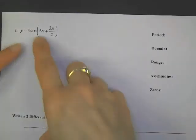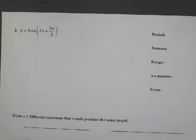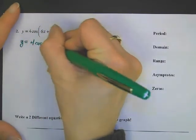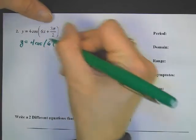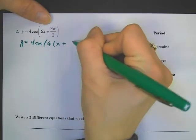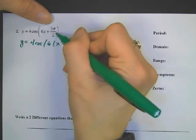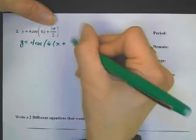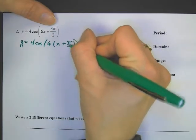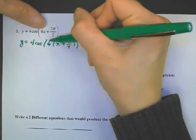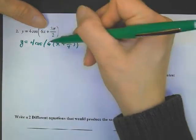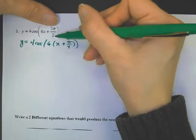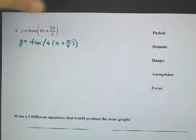Let's do a cosine graph that is certainly not ready — we're going to have to factor out a 6. Dividing by 6 means putting a 6 on the bottom. Then 3 over 12 gives π over 4 — let's verify: 6 times x, good; 6π divided by 4 — does 6 over 4 reduce to 3 over 2? Okay, I think we have it.